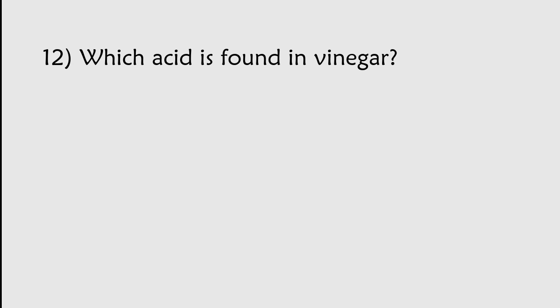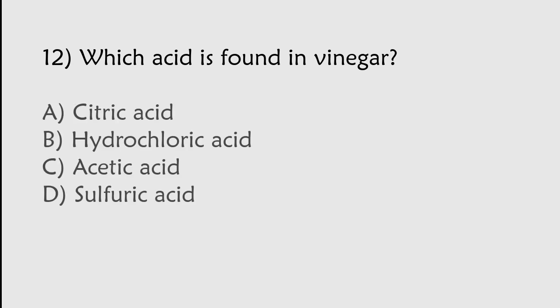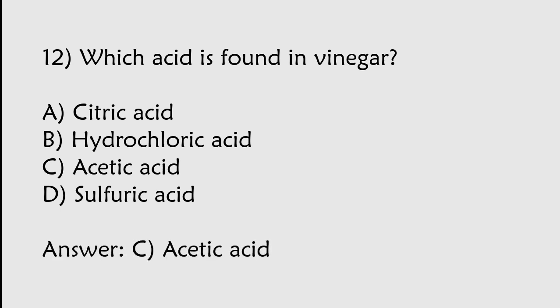Which acid is found in vinegar? Citric acid, Hydrochloric acid, Acetic acid, Sulphuric acid. The correct answer is option C. Acetic acid is found in vinegar.